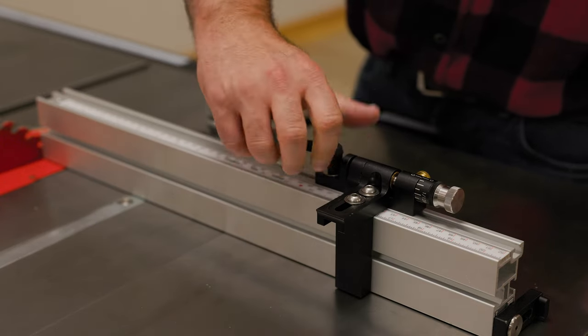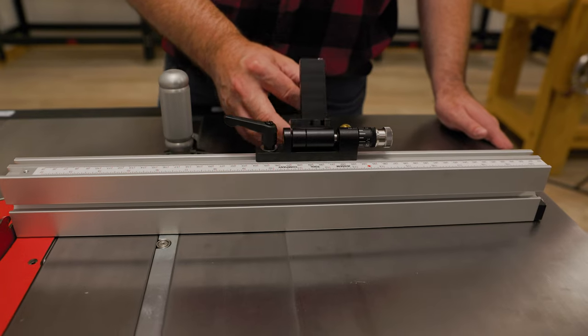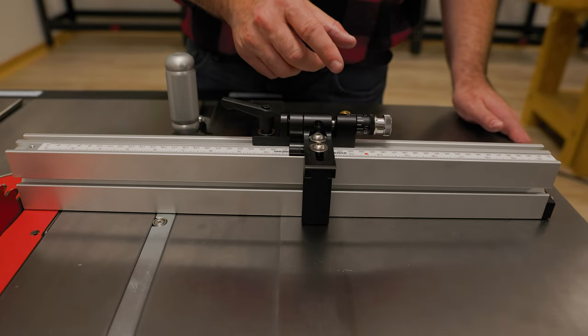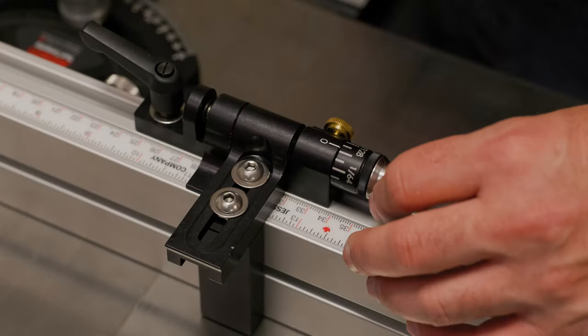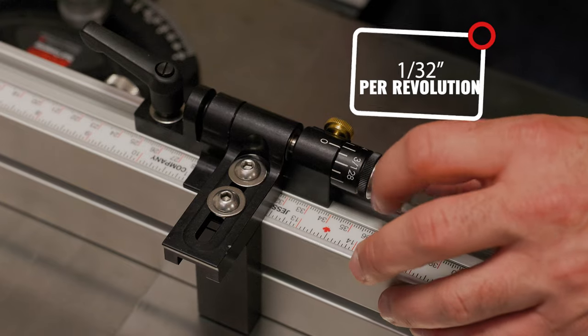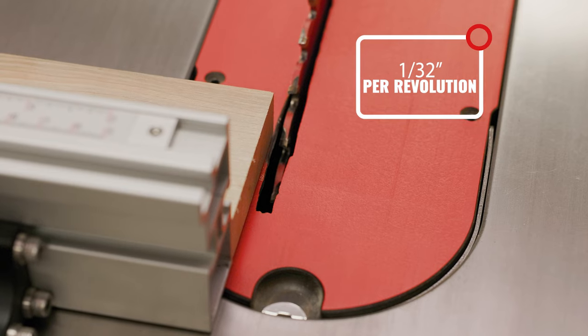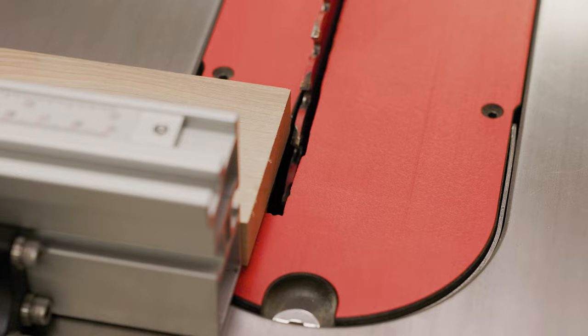Our final included accessory is the brand new micro adjuster. This micro adjuster features an adjustable flip stop that accepts up to a ¾ inch sacrificial fence. Each revolution of the knob moves the flip stop 1/32nd of an inch, keeping your cuts consistently accurate, right down to the smallest of details.